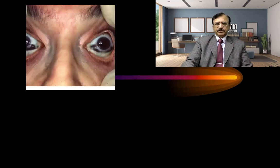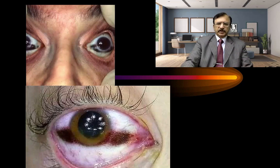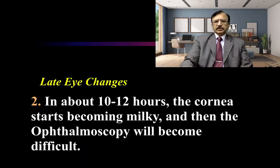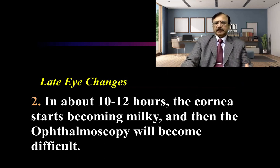This picture shows the tache noire in closer view. You can also see the haziness of the cornea and the dilated pupil — so this picture demonstrates three phenomena: the dilated pupil, the cloudiness, and the tache noire. Then in about 10 to 12 hours, the cornea starts becoming milky, and ophthalmoscopy will not be possible once the cornea has clouded.